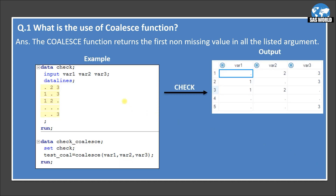In this example, in the first data step, I am creating a dataset named 'check' and creating three variables: variable one, variable two, variable three — all three are numeric. These are the observations or values I am entering. The output has five observations. In the first observation, variable one is missing, but variable two and variable three have values two and three. In the second observation, the first value is one, second is missing, and third is three. In the third observation, the first two variables have values one and two, and the third value is missing. In the fourth observation, all three variables have missing values. In the last observation, the first two variables have missing values and the last one has value three.